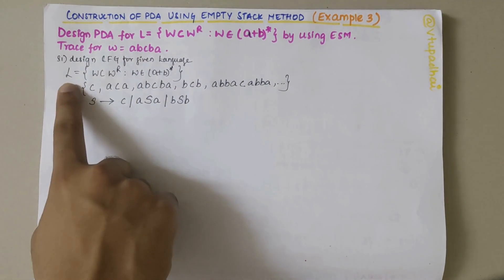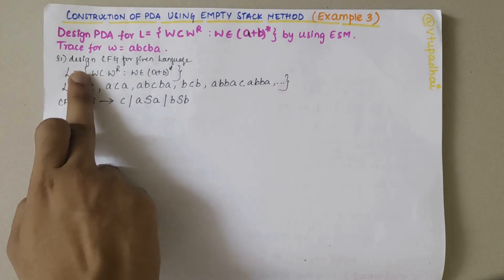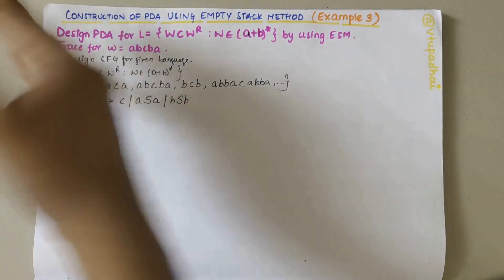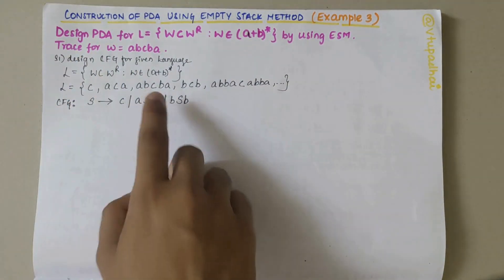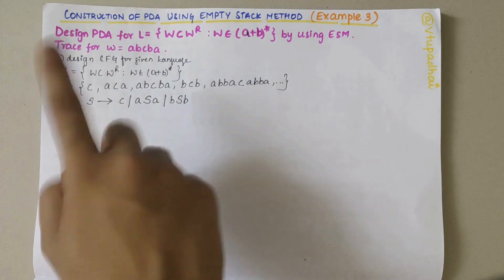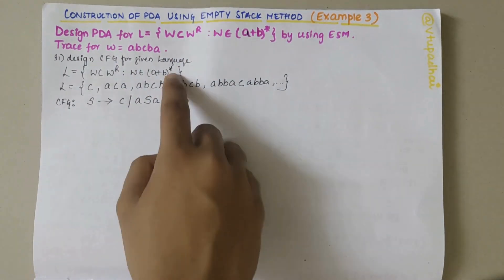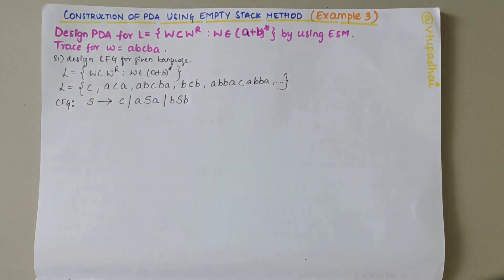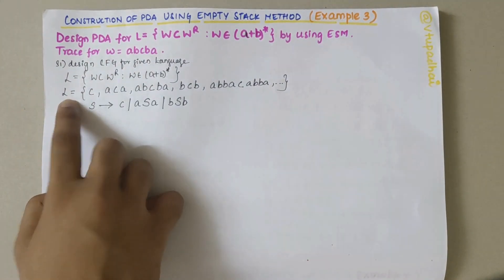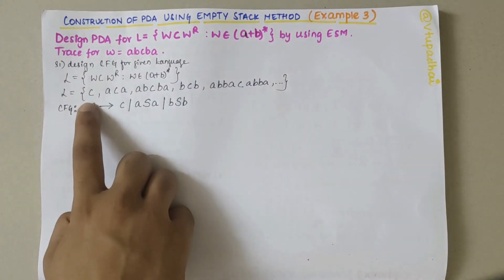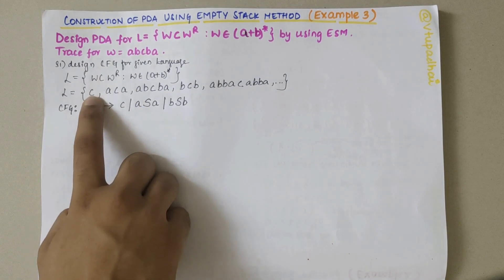The language is W C W^R — whatever W is, its mirror image should appear after C. So the string has the form W C W^R, with C in the middle. W belongs to {A, B}*, meaning W could be A, B, nothing, or lambda. My first step is to define the CFG. Before that, I'll expand the language with examples.